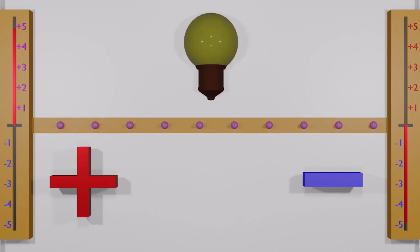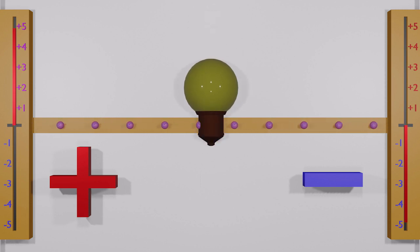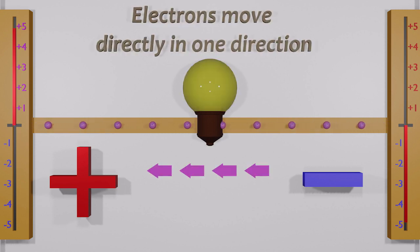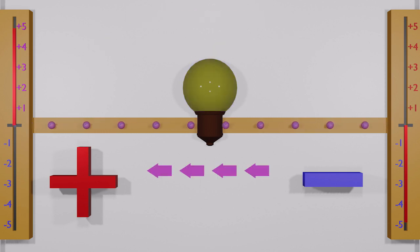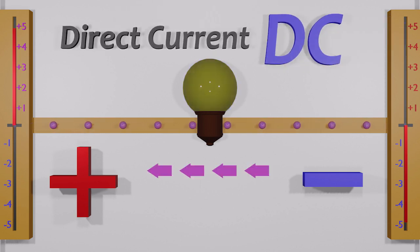A light bulb can convert the energy of moving electrons into work. Here the electron flow only moves in one direction. So we call it as a direct current flow. In short form, DC.